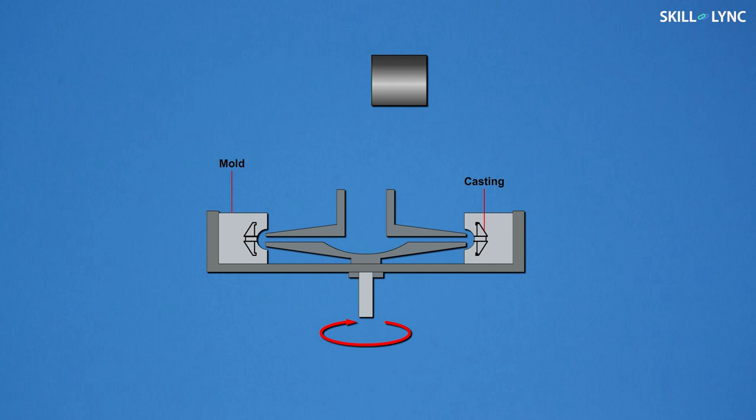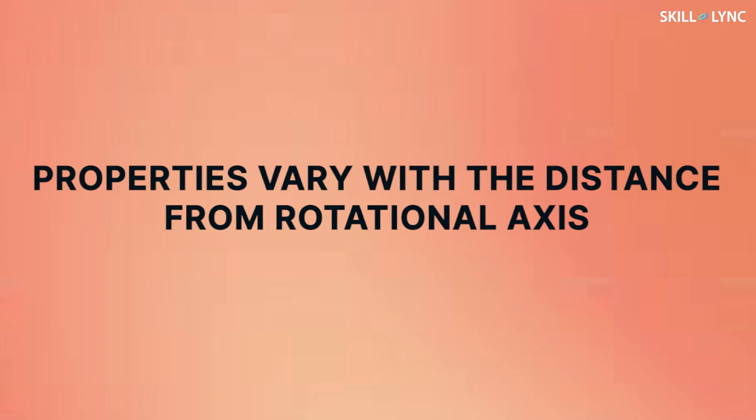As the entire setup rotates, the molten metal is poured from the center as shown in this animation. This molten metal is then forced into the mold cavity due to the centrifugal forces caused by rotation. This process is also known as centrifuge casting, and in this process, the properties of the final casting varies with the distance from the axis of rotation.